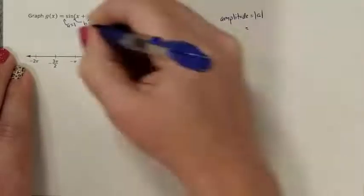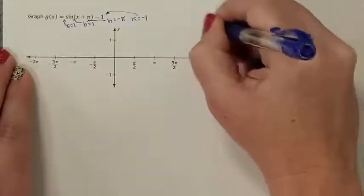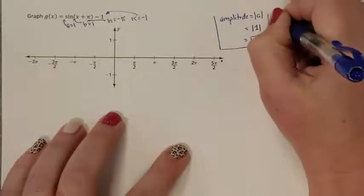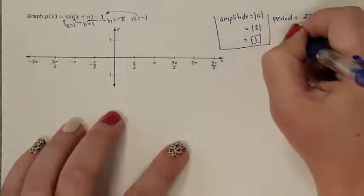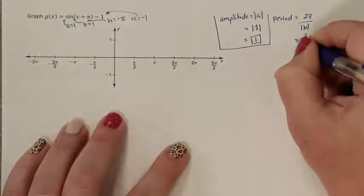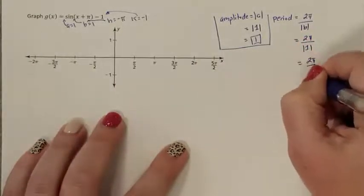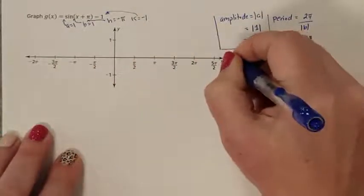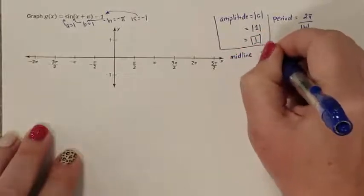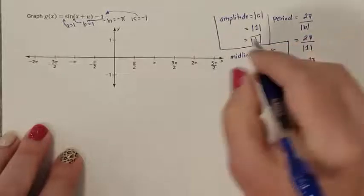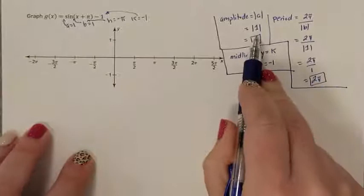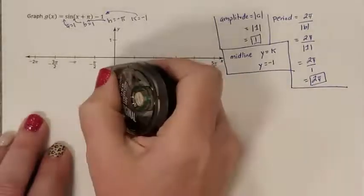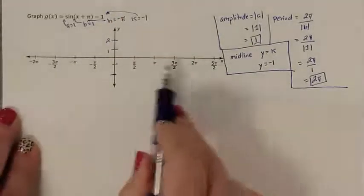My amplitude is the absolute value of a — the absolute value of 1 is 1. From wherever the midline is, I need to go up 1 and down 1. My period is 2 pi over the absolute value of b — the absolute value of 1 is 1 — so my period is 2 pi. But first I need to look at what's happening with the midline. Midline is y equals k, and my k is negative 1, so my midline starts at negative 1. I need to rescale my y-axis.